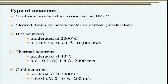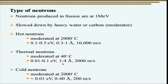Neutrons can be classified into different regimes depending on their energy. Hot neutrons are moderated at 2000°C, have an energy range of about 0.1 to 0.5 eV, a wavelength of about 0.3 to 1 angstrom, and travel at 10,000 m/s. Thermal neutrons are moderated at about 40°C, have an energy range of 0.01 to 0.1 eV, a wavelength of 1 to 4 angstroms, and travel at 2000 m/s.